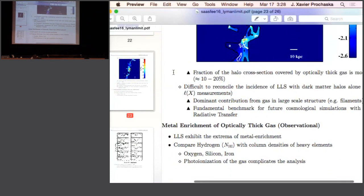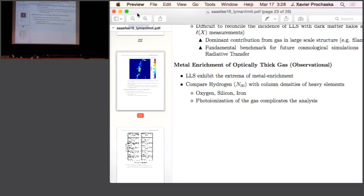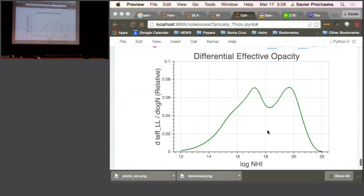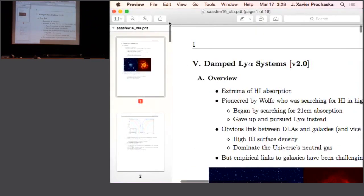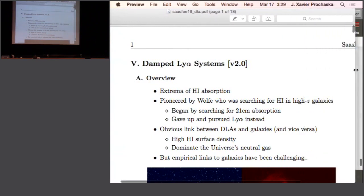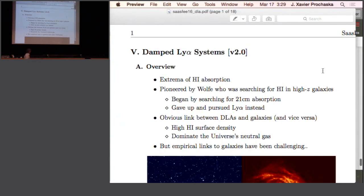I'll leave it there. I put in the notes some description of metal enrichment, but you can read that yourself. The one takeaway point is the metal enrichment within these optically thick systems exhibit the extremum of metal enrichment from supersolar metallicities to nearly primordial. That finishes description of optically thick Lyman limit systems. Now a presentation on damped Lyman alpha systems, which are the extrema of H1 absorption and complete our census of what is absorbing H1 Lyman alpha in the universe.